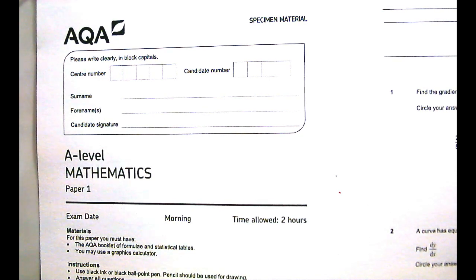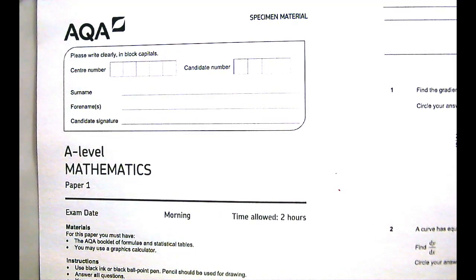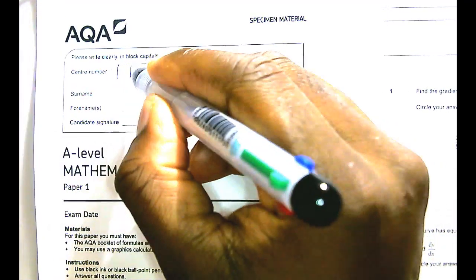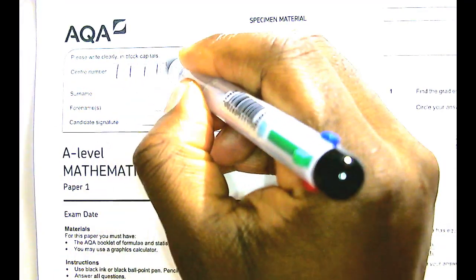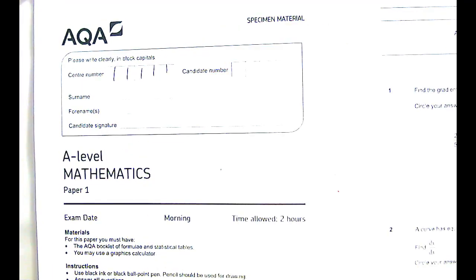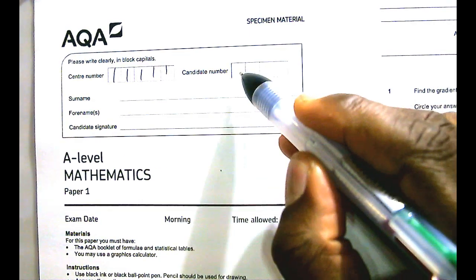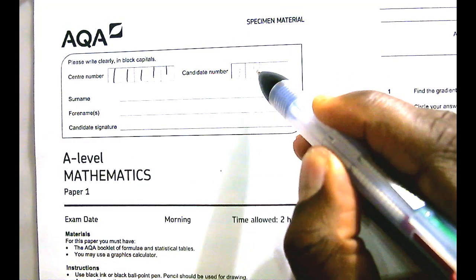So first of all, you want to read all the instructions on the front page, and you want to fill in your details in black ink as requested. So I'm just going to enter my section, my centre number, candidate number.